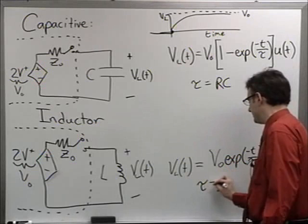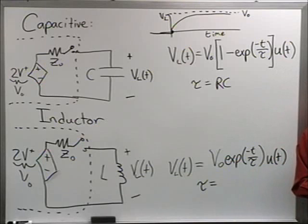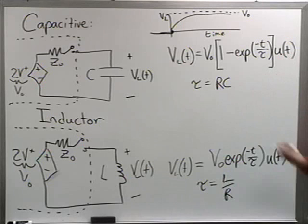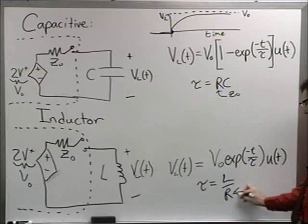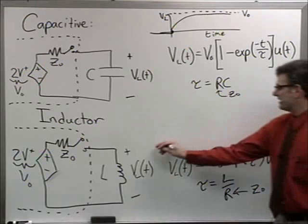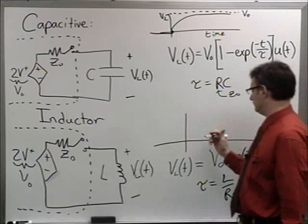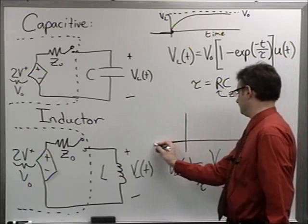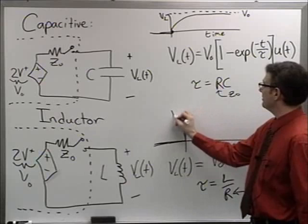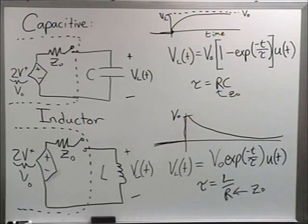What would this curve look like? It jumps up because it looks like an open circuit, reaching value V₀, and then exponentially decays. So with that in mind, let's go ahead and do a more sophisticated example.